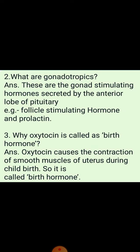Question number 2: What are gonadotropics? These are the gonads-stimulating hormones secreted by the anterior lobe of the pituitary. The anterior lobe of the pituitary secretes many hormones — for example, follicular stimulating hormone, prolactin, thyroid stimulating hormone, adrenocorticotrophic hormone, and luteinizing hormone. Among these, the gonadotropic hormones are only follicular stimulating hormone and prolactin.